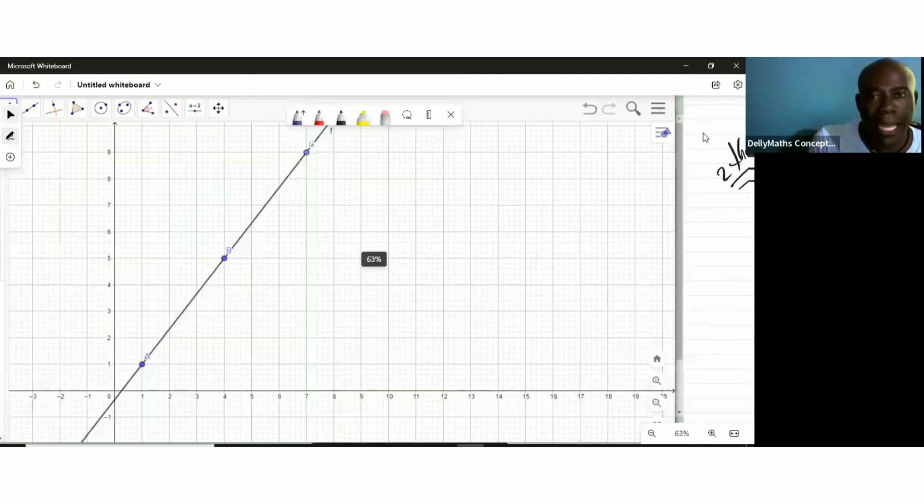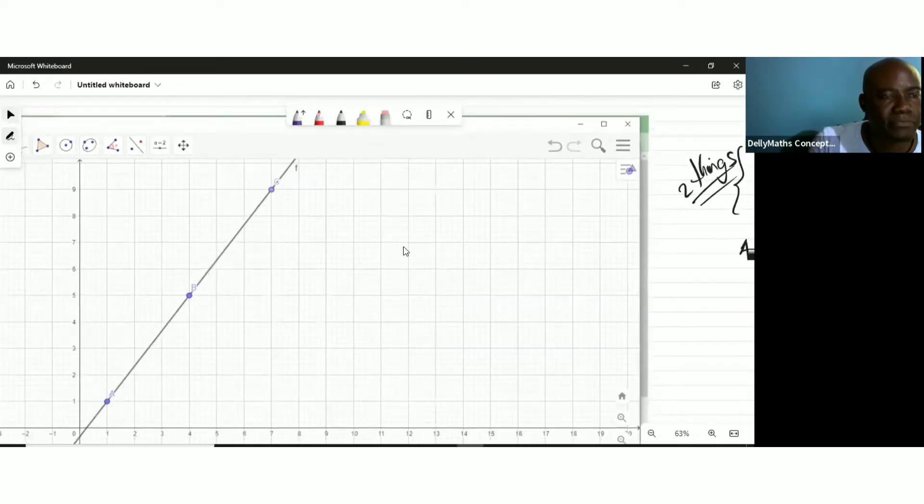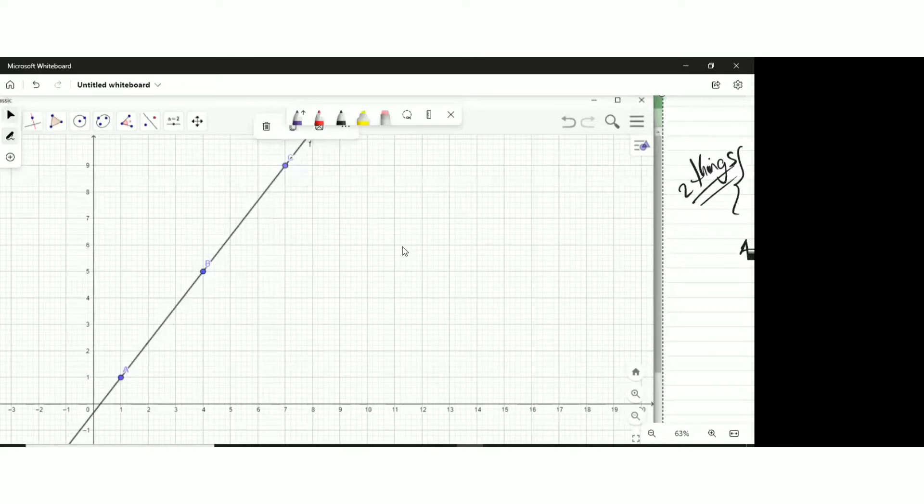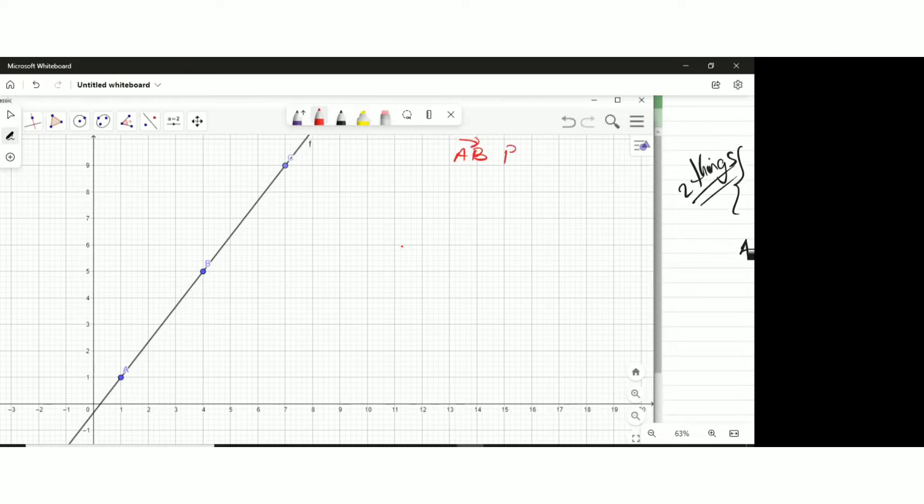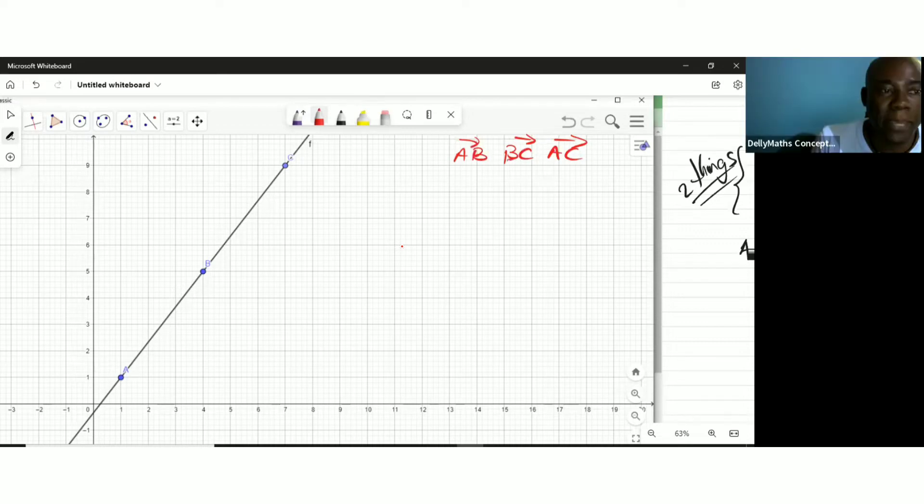Now we're looking at a line. The question would say, prove that A, B, and C are collinear. You need to understand that if we're dealing with A, B, and C, then we have three line segments. There is A to B, B to C, and A to C. There are three.